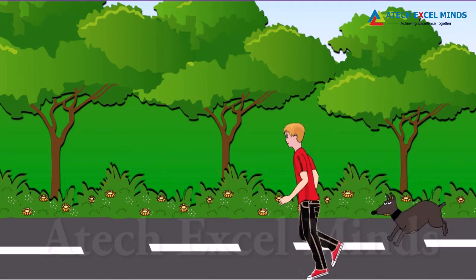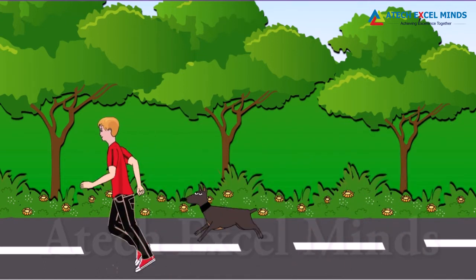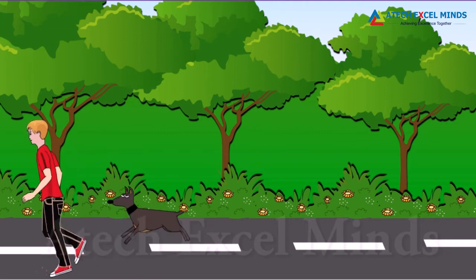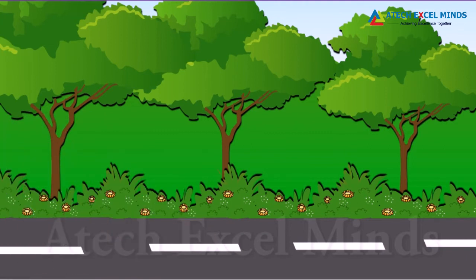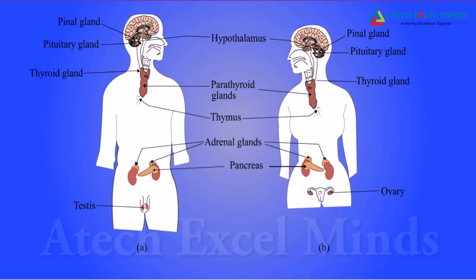Adrenaline helps by increasing the heartbeat rate so that oxygen supply is increased and we are able to use our muscles. Breathing rate is also increased and skeletal muscles receive higher blood supply. We have many endocrine glands in our body, such as the pituitary gland.